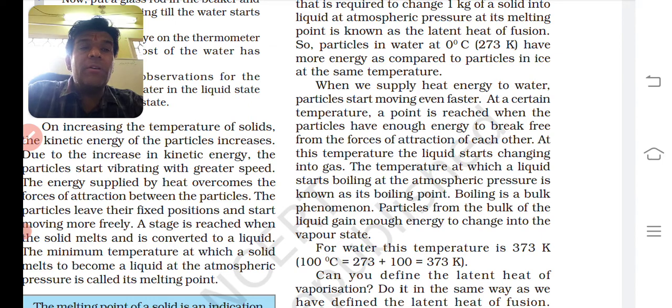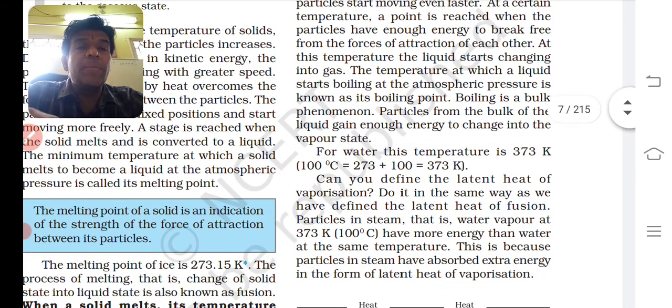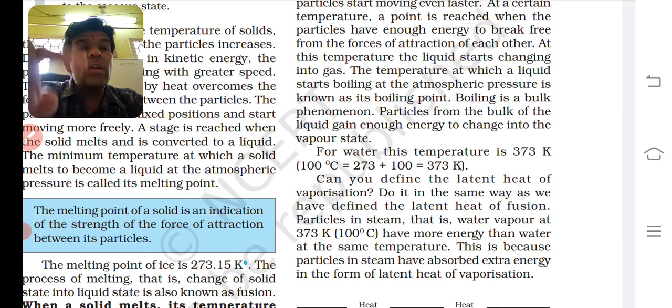For example, for water this temperature is 373 Kelvin. Zero degree centigrade was 273 Kelvin, here it is 373 Kelvin, so 0 plus 100 equals 100 degree centigrade or 373 Kelvin. So can you define the latent heat of vaporization? Do it in the same way as we have defined the latent heat of fusion.